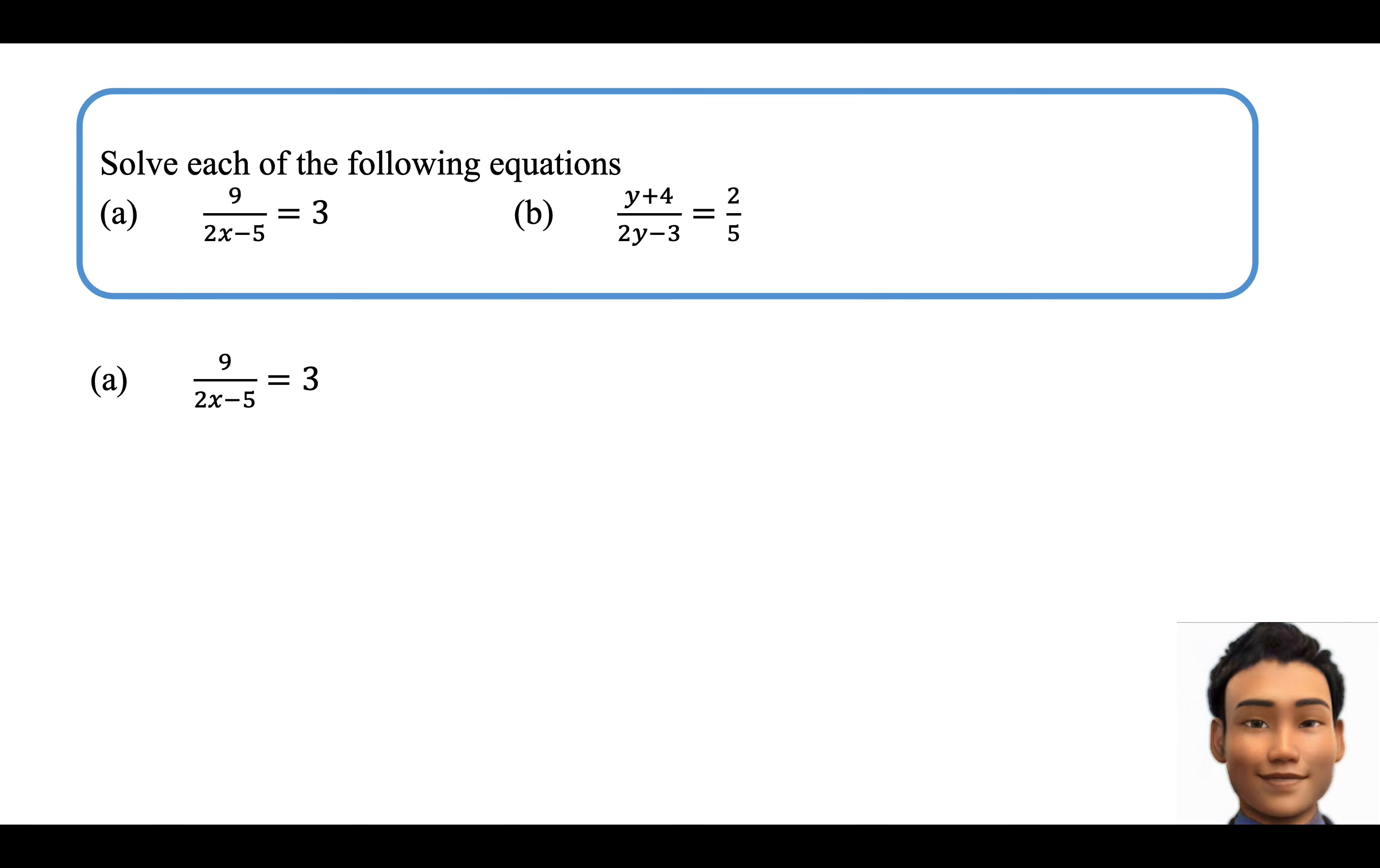Alternatively, you can actually visualize some kind of cross multiplication happening as we spoke about in the previous video. So over here, 3 is actually 3 over 1, and then we can proceed to cross multiply.